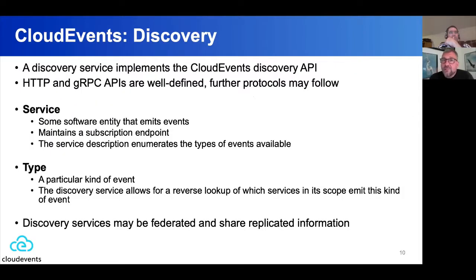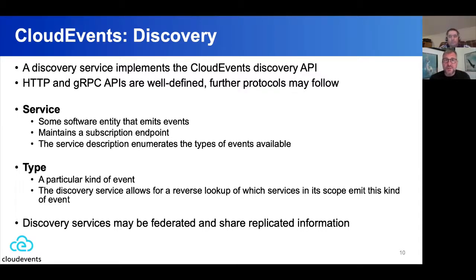The questions we need to answer are: who produces events, which events are produced, which subscription options are available, how do I get the events delivered to me, and where and how do I subscribe. We're not very prescriptive — that's a theme in Cloud Events overall. We are defining abstractly a data model; for instance what a service is for discovery. Based on this we define an HTTP and a gRPC API in current drafts, and we might have further protocols such as AMQP later. When you implement that interface, you have a discovery service.